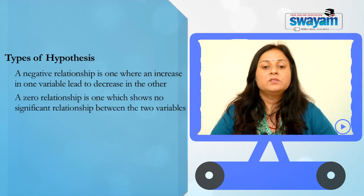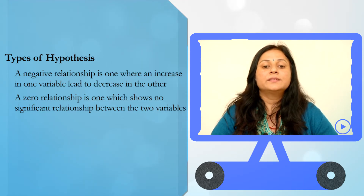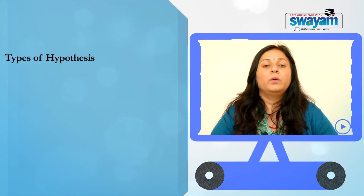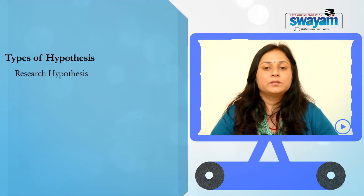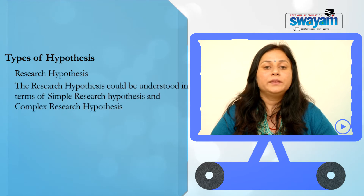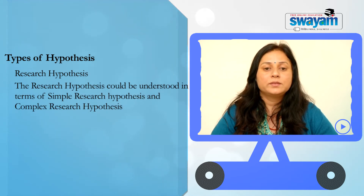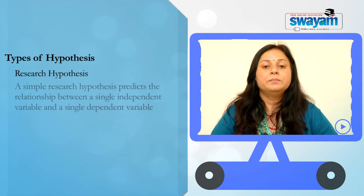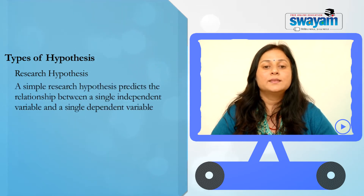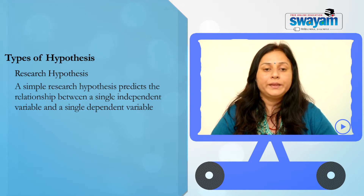Once we have understood variables, we can discuss the various types of hypothesis. The first one is the research hypothesis. The research hypothesis could be understood in terms of simple research hypothesis and complex research hypothesis. A simple research hypothesis predicts the relationship between a single independent variable and a single dependent variable.